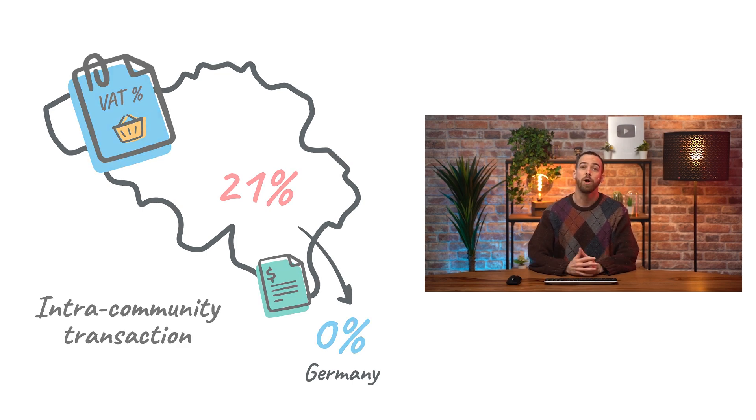Fortunately, Odoo has fiscal positions, which are sets of rules that can automatically map the generic tax rates and accounts on a product to the specific tax rate and account for each partner.